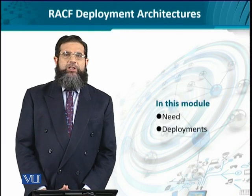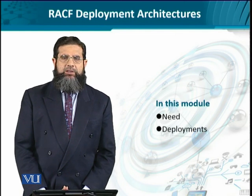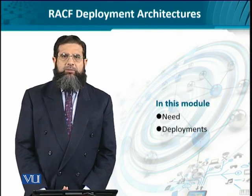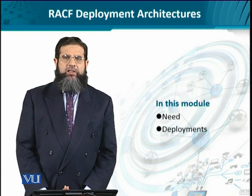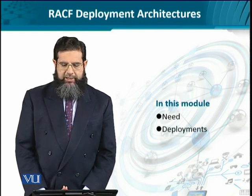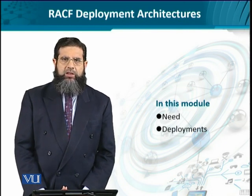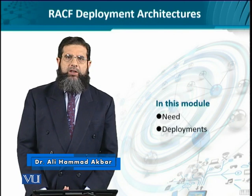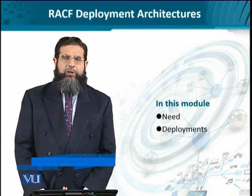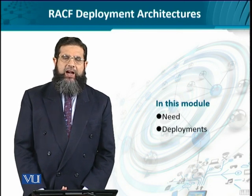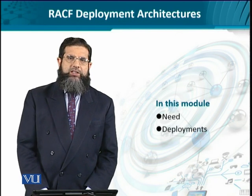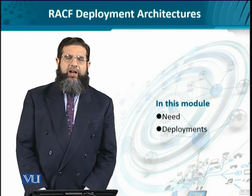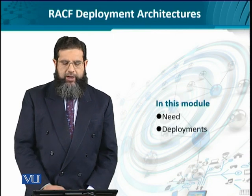The resource and admission control function is a service provided by the next-gen network architecture to serve both the transport stratum and the service stratum. It comprises certain network elements and has a certain distributed nature. The deployment designs and options available have a direct impact on the kind of services, the administrative control, and the interoperability we can get between the policy decision and policy enforcement functional entities. We'll first understand the need for such variety in deployment, then look at the deployment architectures themselves.